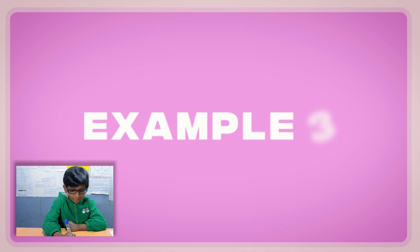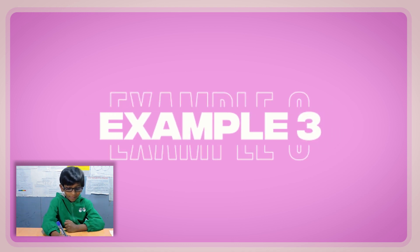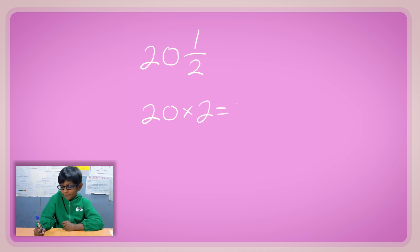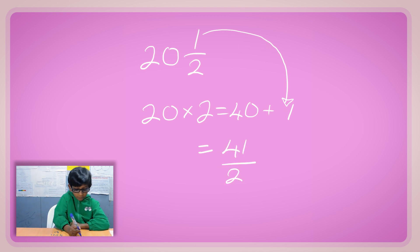Example 3. We are going to have 20 and 1 over 2. 20 times 2 plus 1. That's what we need. 20 times 2, 40 plus 1. 40 plus 1, 41. 41 over 2.